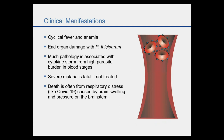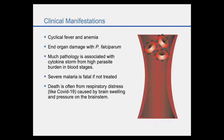Malaria, when you get it, can be very nasty. The most typical symptoms are cyclical fever and anemia, but you can also get end organ damage, especially with plasmodium falciparum. Much of the pathology is associated with a cytokine storm from the high parasite burden in the blood stages. If you aren't treated and haven't been exposed before, malaria can often be fatal. Death is often from respiratory distress, similar to what you get with COVID-19, and it's caused by brain swelling and pressure on the brainstem.